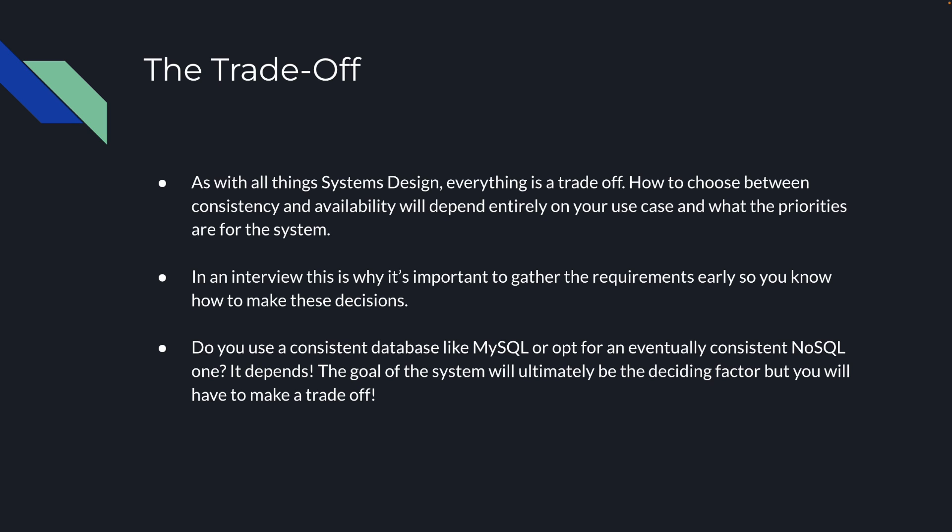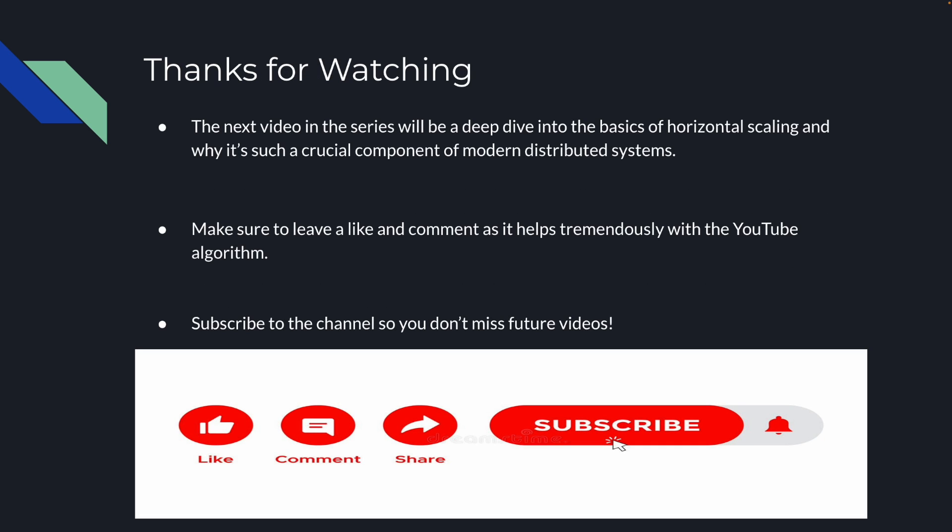As with all things in systems design, everything is going to be a trade-off. How to choose between consistency and availability depends entirely on your use case and what the priorities are for your system. In an interview, this is why it's important to gather requirements early so you know how to make these decisions — do you use a consistent database like MySQL or opt for an eventually consistent NoSQL one? The goal of the system will ultimately be the deciding factor. Please make sure to leave a like and a comment as it helps with the YouTube algorithm, and subscribe so you don't miss future videos.